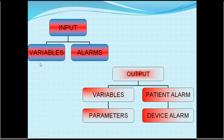The input data consists of the control variables and phase variables that are set for the patient, along with the alarm settings. These are the data which determine and define the character of the breath for the patient.